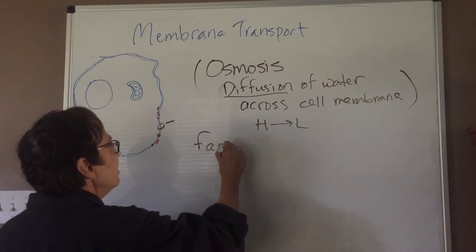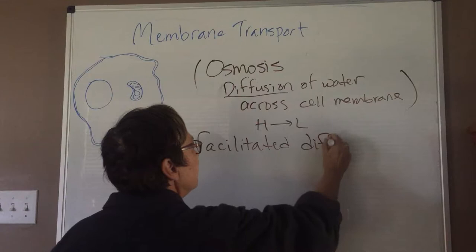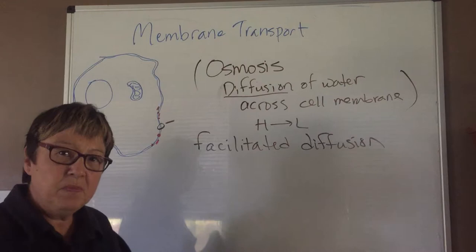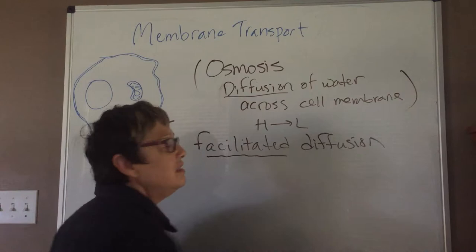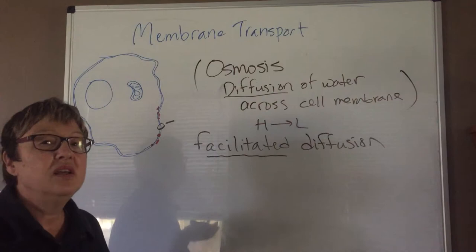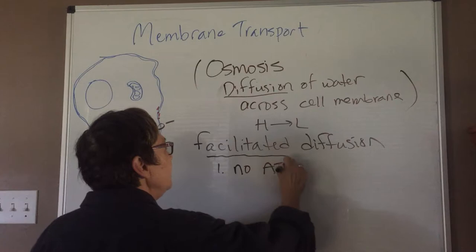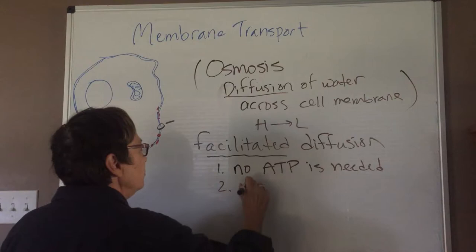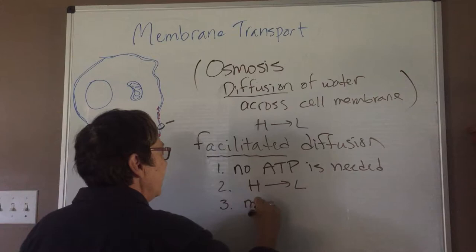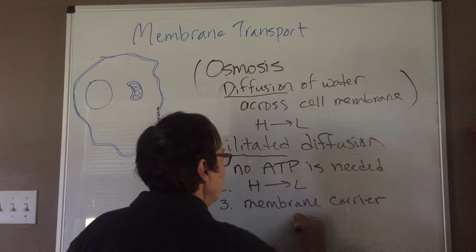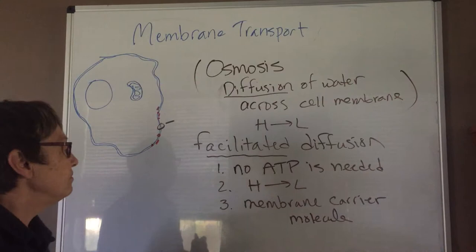There's another category of diffusion called facilitated diffusion. The term facilitated means to assist or to help. And so this is the type of diffusion that is assisted by a membrane protein. So no ATP is needed. We do move substances from high to low concentration, but we have to use a membrane carrier molecule to move from high to low concentration.